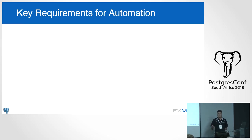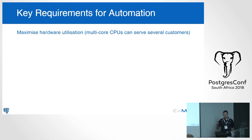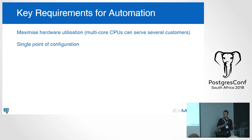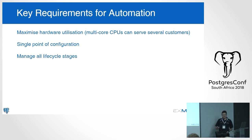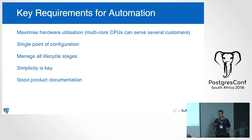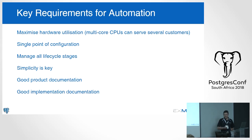The key requirements after dealing with Fabric were: first, maximize hardware utilization — multiple applications and customers on one piece of hardware. Our simulations are single-core but heavy, so I can service a number of clients in parallel on a multi-core CPU. We wanted a single point of configuration, which Ansible largely took care of, and we wanted to manage all lifecycle stages from provisioning through deployment, maintenance, and even migrations.